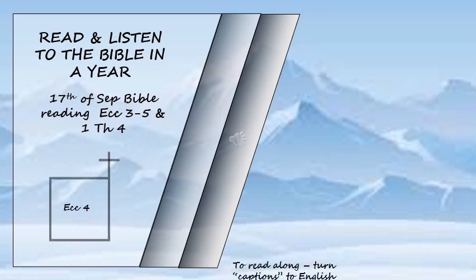Ecclesiastes chapter 4. Again I looked and saw all the oppression that was taking place under the sun. I saw the tears of the oppressed, and they have no comforter. Power was on the side of their oppressors, and they have no comforter. And I declared that the dead who had already died are happier than the living who are still alive.